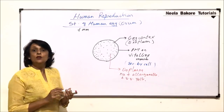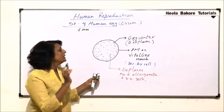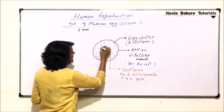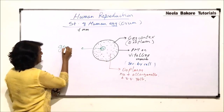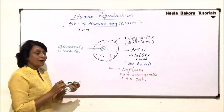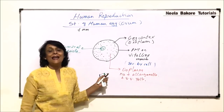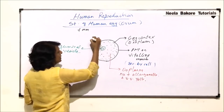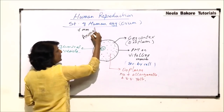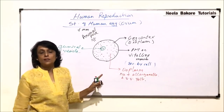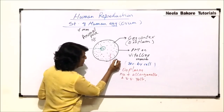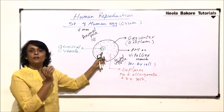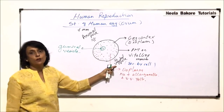The nucleus is present and it is eccentric, meaning it is not in the center of the egg but rather on one side. This nucleus is known as the germinal vesicle. Because of this eccentric position of the nucleus, the egg has polarity — the side where the nucleus is located is called the animal pole, and the entry of sperm into the egg always takes place through this animal pole. The opposite end is termed the vegetal pole.